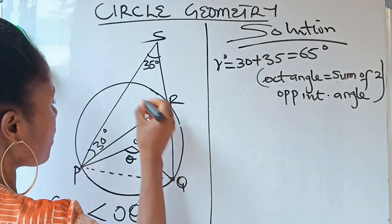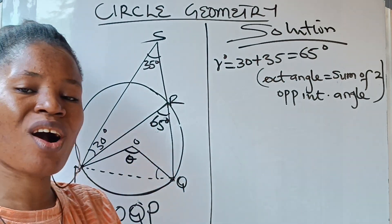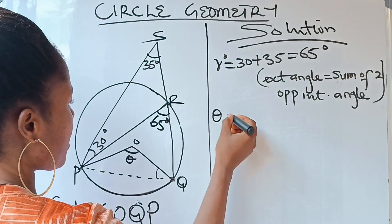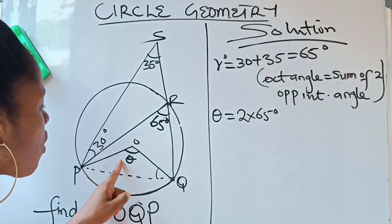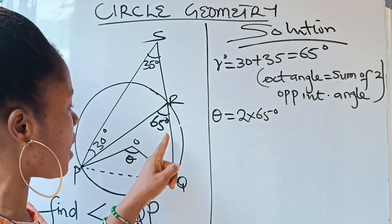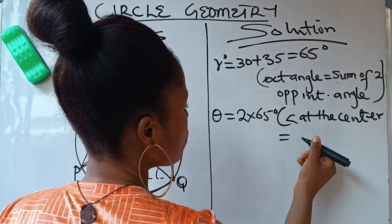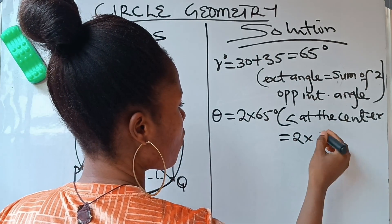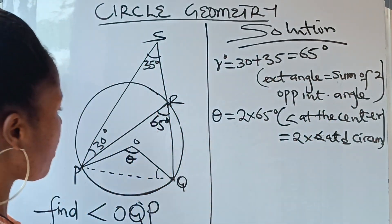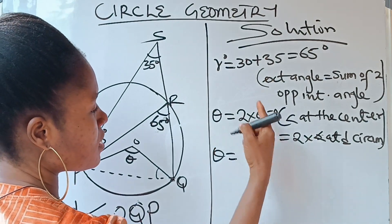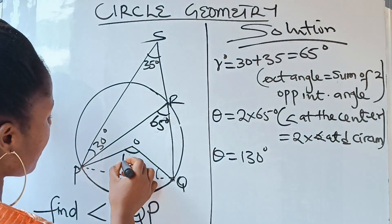We have r as 65 degrees — the angle at the circumference. According to our second theorem, theta equals two times r, that is two times 65 degrees. The reason: the angle at the center equals two times the angle at the circumference. So theta equals 2 times 65, which gives us 130 degrees.